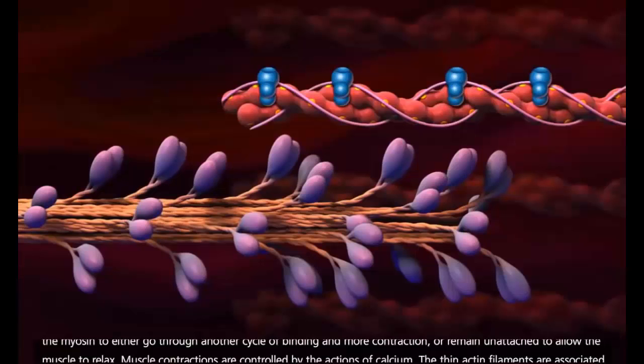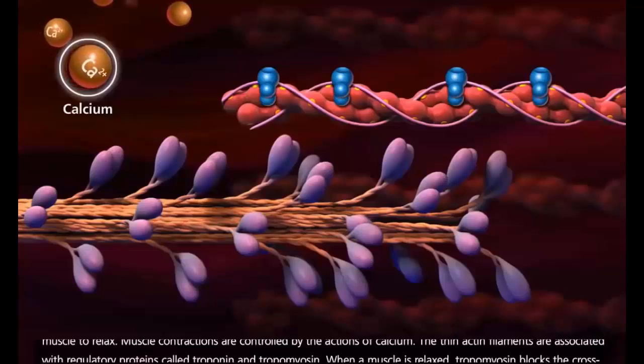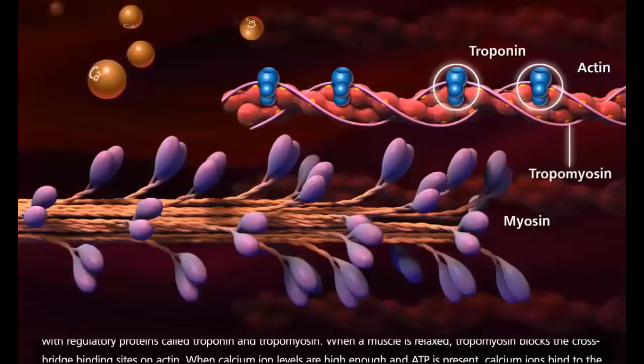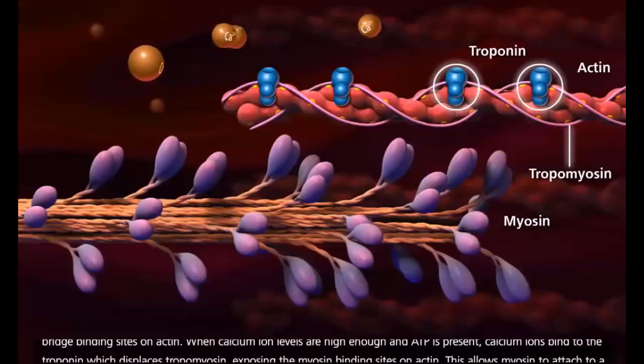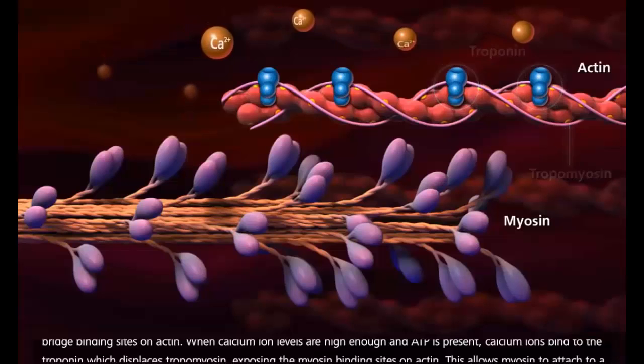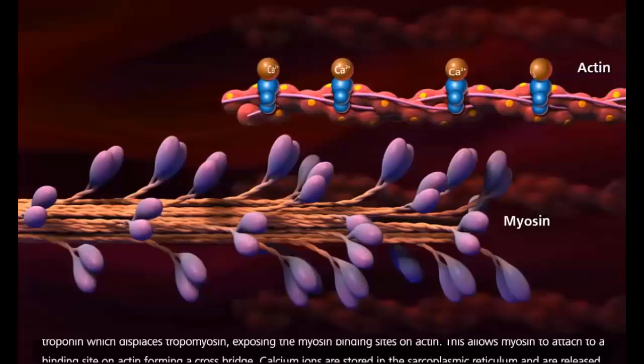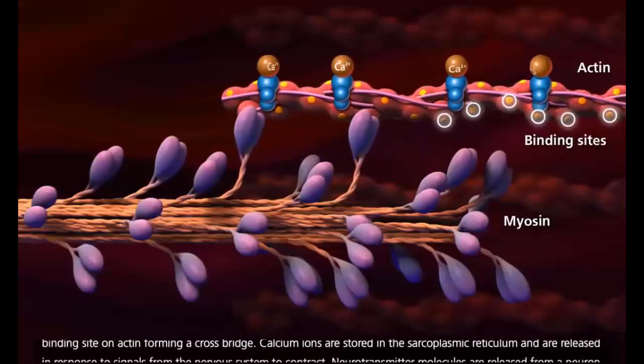Muscle contractions are controlled by the actions of calcium. The thin actin filaments are associated with regulatory proteins called troponin and tropomyosin. When the muscle is relaxed, tropomyosin blocks the crossbridge binding sites on actin. When calcium ion levels are high enough and ATP is present, calcium ions bind to the troponin which displaces tropomyosin, exposing the myosin binding sites on actin. This allows myosin to attach to a binding site on actin, forming a crossbridge.